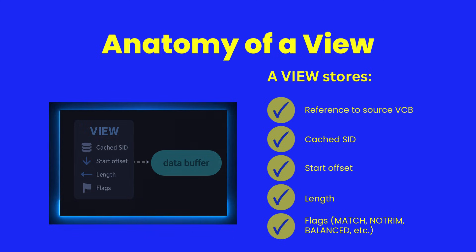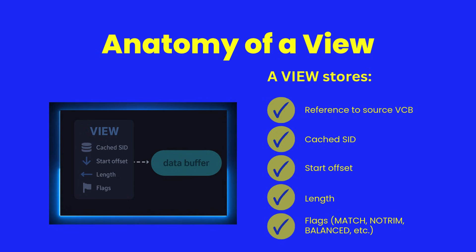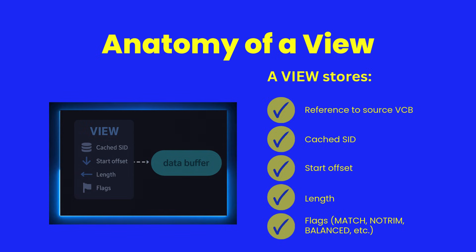A view variable contains metadata only: a cached SID, offsets into the source string, the computed slice length, and any flags that affect behavior. The actual characters are always stored in the source string's buffer. This is why views are so lightweight — each one is just a descriptor pointing into another descriptor.